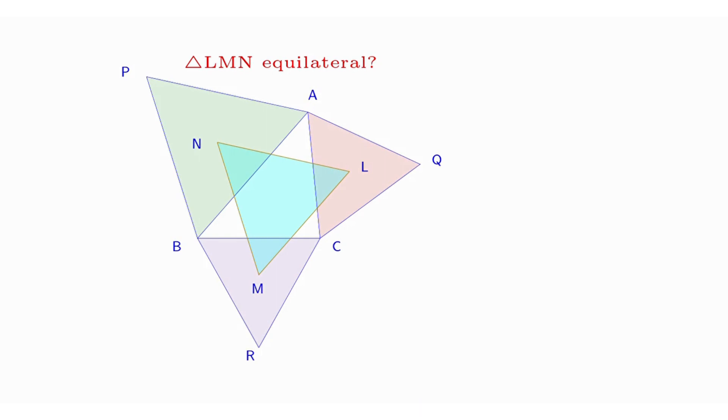Given a triangle ABC, construct three equilateral triangles on its sides: ABP, BRC, and CAQ. The lines joining their centers N, M, and L form an equilateral triangle.